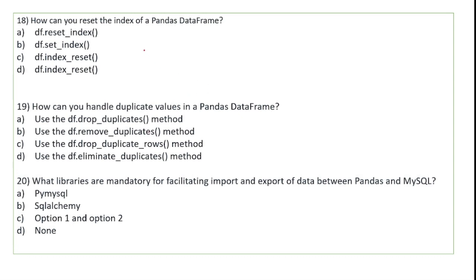How can you reset the index of a pandas data frame? You will use df.reset_index function. The reset_index function is used to reset the index of a data frame, creating a default numeric index like 0, 1, 2, 3.